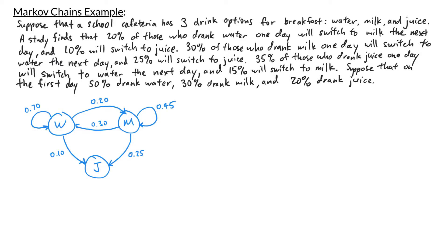Lastly, we're told that 35% of those who drank juice one day will switch to water, so I draw an arrow from juice to water labeled 0.35. And 15% will switch to milk, so I draw an arrow from juice to milk labeled 0.15. That accounts for 50% of those who drank juice, and the remaining 50% will stick with juice — so I draw an arrow from juice back to itself labeled 0.50.